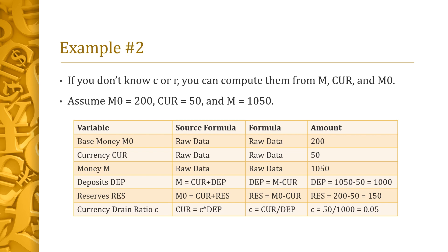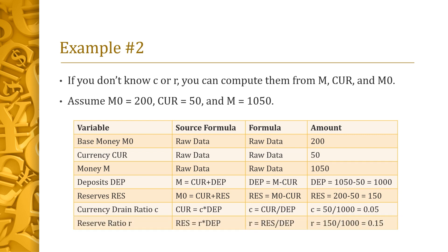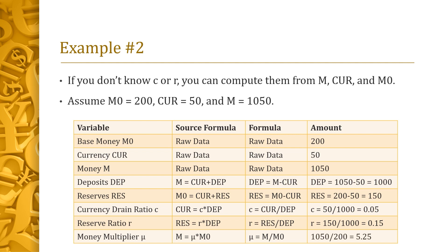The reserve ratio R equals RES divided by DEP, which is 150 divided by 1,000, giving 0.15. We also show a different way to compute the money multiplier mu: solving for mu in the equation M equals mu times M0, we get mu equals M divided by M0. In this case, that is 1,050 divided by 200, which equals 5.25, as before.